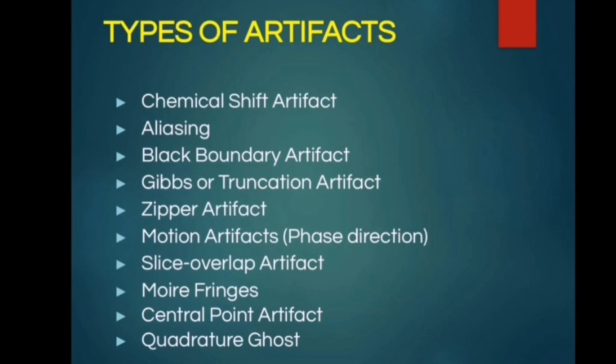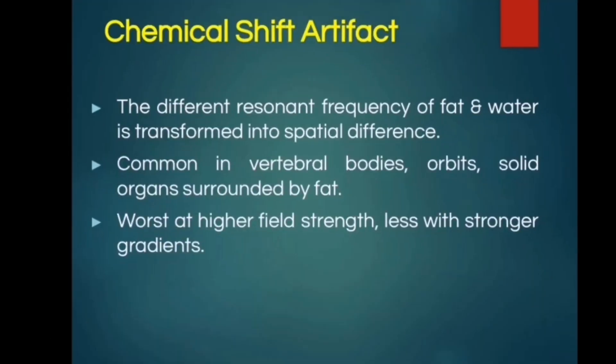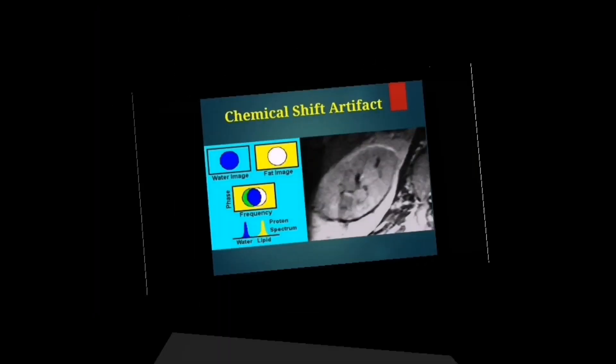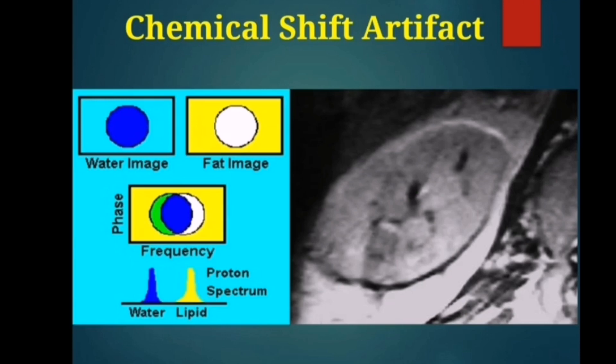In chemical shift artifact, the different resonant frequency of fat and water is transformed into a spatial difference. It is common in vertebral bodies, orbits, and solid organs surrounded by fat. It is worse at higher field strength and less with stronger gradients.